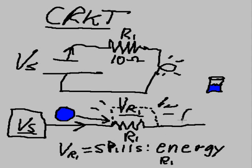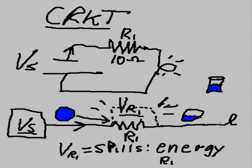The electrons keep traveling through, but they don't have so much energy now. They've spilled a lot of their energy. Now what are they going to do? They're going to hit the lamp. When they hit the lamp, there's going to be another energy spill. And that's the voltage drop over the lamp. The rest of its energy is going to drop across that light.